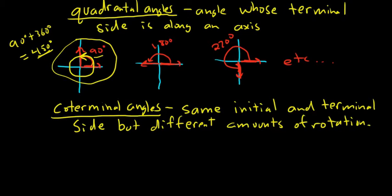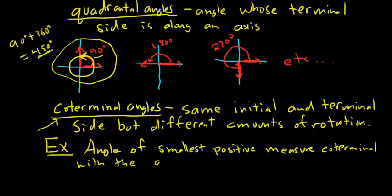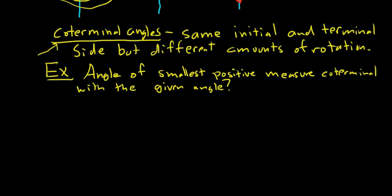Let's do some examples of finding coterminal angles. The question asks for the angle of smallest positive measure that is coterminal with the given angle. If you just ask for any coterminal angle, you can add or subtract 360 once, twice, or 50 times — there are infinitely many coterminal angles with any given angle. But we want the one with the smallest positive measure.